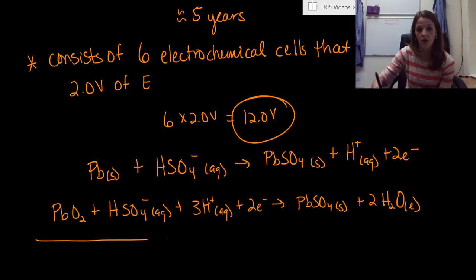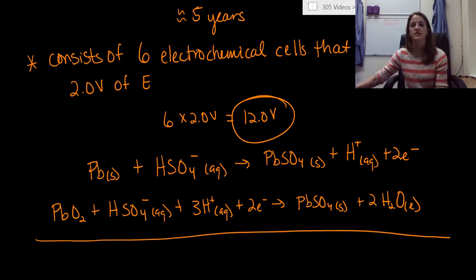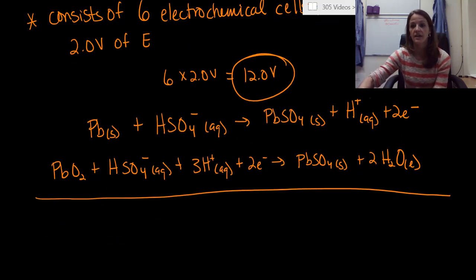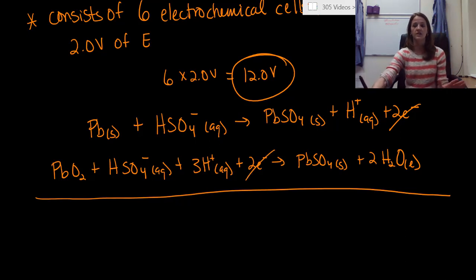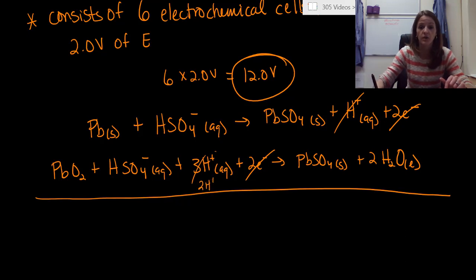And that's the liquid state. So then what we can do is add all of this together. First thing we do is we look, do our electrons transfer? Yes, definitely. We have two electrons here, two electrons here. They definitely cancel out. We're good to go. So now we look at everything else. So I see two of my HSO4 minus on this side, but they're both reactants, so we can't cancel those out. I do see one H plus on this side and three over here, so we're going to cancel out our three and we're going to be left with two H plus left over.